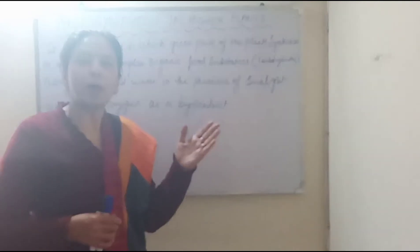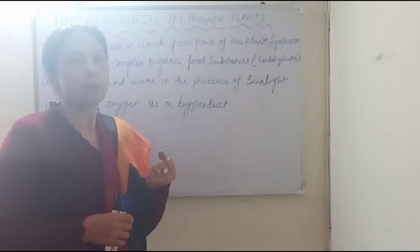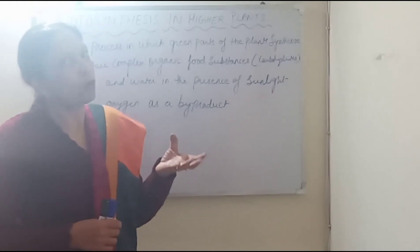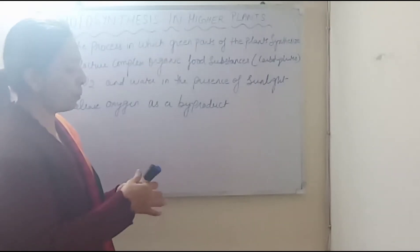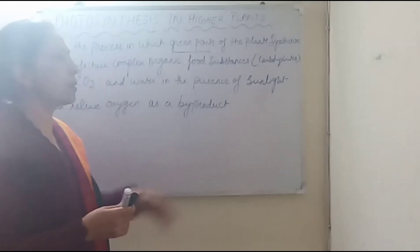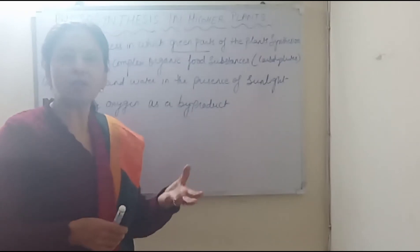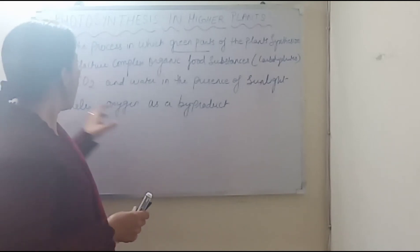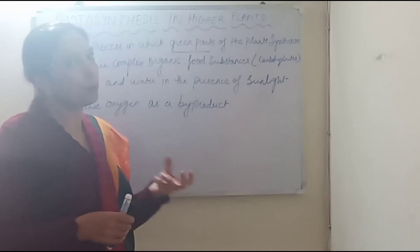In light, plants synthesize food. It is a process in which the green parts of the plants synthesize and manufacture complex organic food substances — glucose, organic food substances, carbohydrates — using carbon dioxide and water as raw materials.